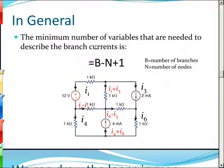In general, the minimum number of variables needed to describe the branch currents is B minus N plus 1, where B is the number of branches and N is the number of nodes. This equation allows us to determine the minimum number of loop currents we need.